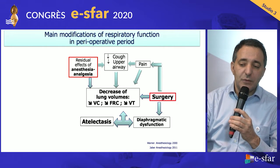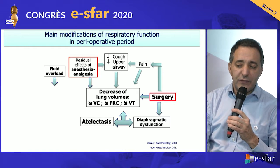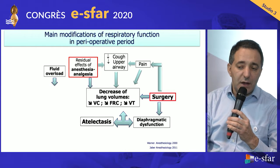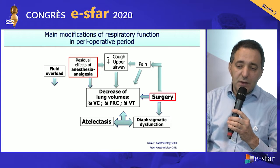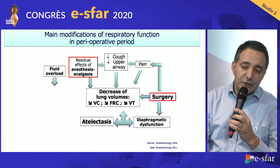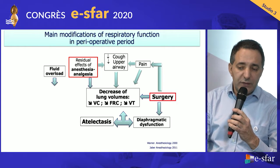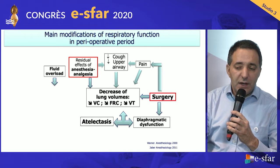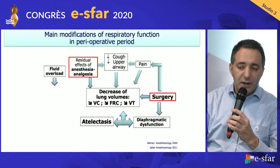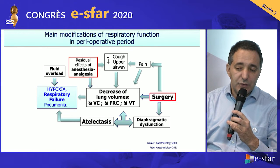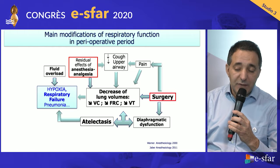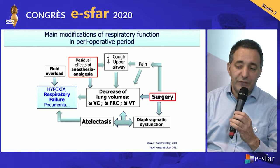Associated to these modifications, you sometimes also have overfluid due to the need of fluid loading during surgery. All these modifications lead to hypoxemia, which in turn leads to respiratory failure. And as you know, atelectasis makes the bed for pulmonary infection.